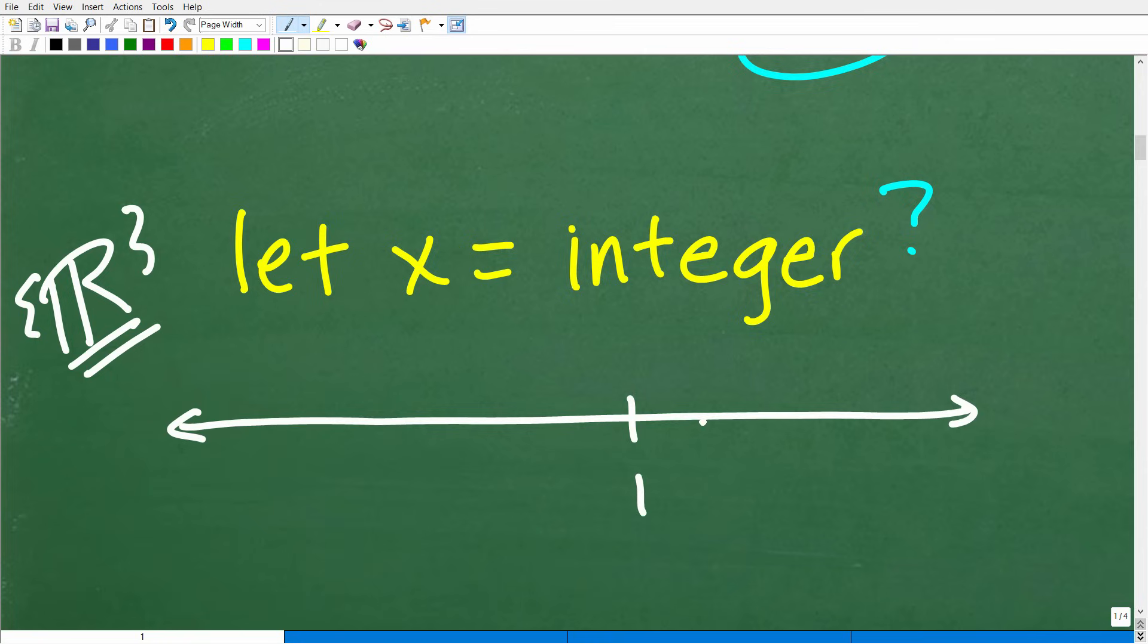These are called the counting numbers. This is what we count with: one, two, three, four, et cetera.